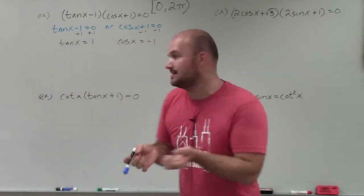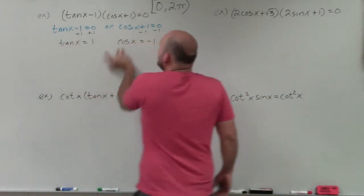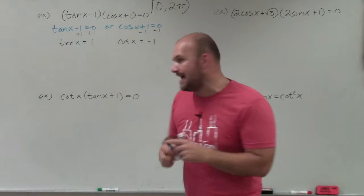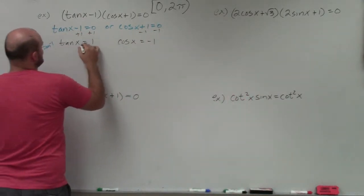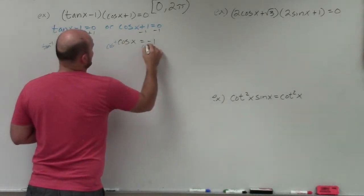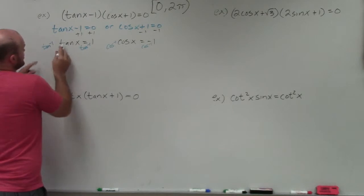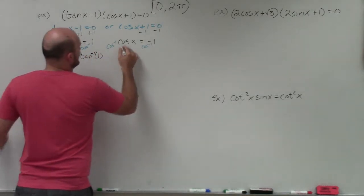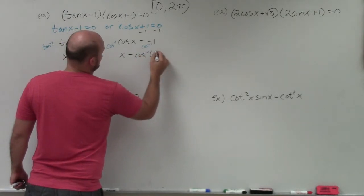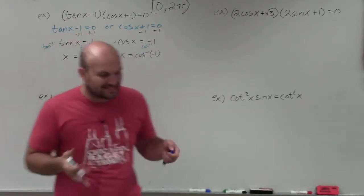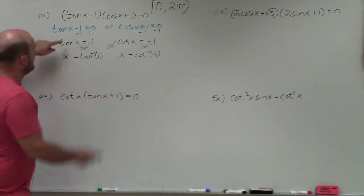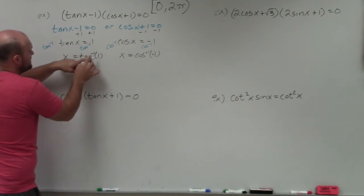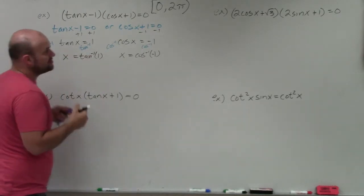Basically, we're trying to solve for x — asking what angle x makes tangent of x equal to 1, and what angle x makes cosine of x equal to negative 1. To isolate x, we take the inverse function on both sides. So x equals the inverse tangent of 1, and x equals the inverse cosine of negative 1. Inverse tangent is asking: the tangent of what angle is going to equal 1? To answer that, we go to our unit circle.